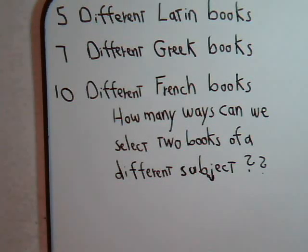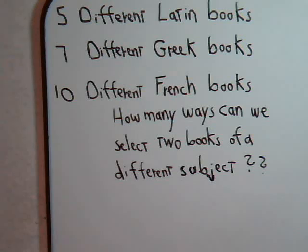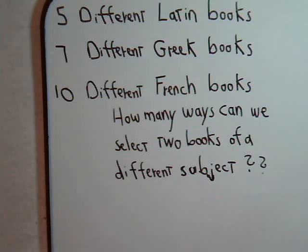Let's use our combination approach to solve this problem. Say that you have five different Latin books, seven different Greek books, and ten different French books. How many ways can you select two books of a different subject? There are two different approaches we could use to tackle this problem, but let's use the combination approach since that's what we're demonstrating in this video.